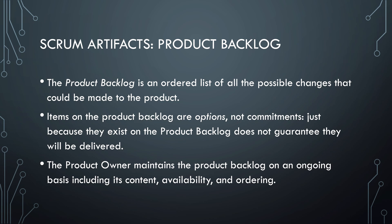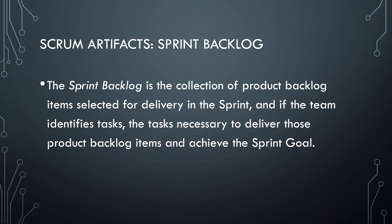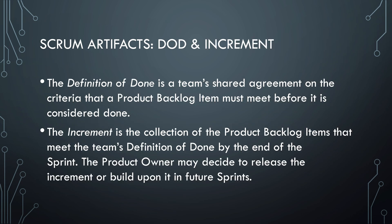The sprint backlog is a collection of items from the product backlog created at the beginning of each sprint, and also contains specific tasks needed to deliver those items. There are two more artifacts: the definition of done and the increment. Each product backlog item should have a definition of done explaining the criteria an item must meet before it's considered complete — for instance, for a password reset mechanism, this could mean there is a user interface, the system sends password reset mails, and it can generate and process password reset tokens. The increment is the collection of items meeting their definitions of done at the end of the sprint, which may be released or further built upon in the next sprint.